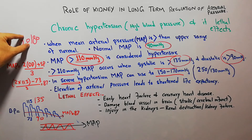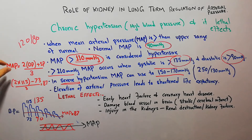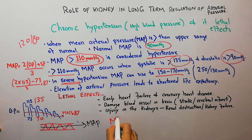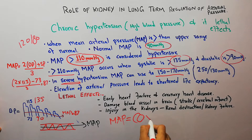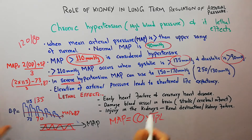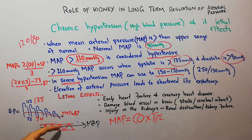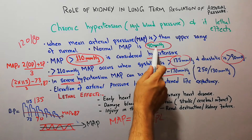Blood pressure is measured directly with a blood pressure machine, while mean arterial pressure must be calculated using the equation. As discussed in previous lectures, MAP is also equal to cardiac output multiplied by total peripheral resistance — another method of calculating MAP — which represents the average flow of blood through the vessels.